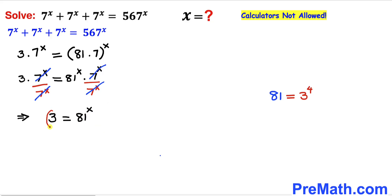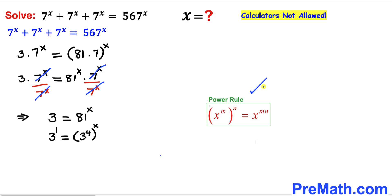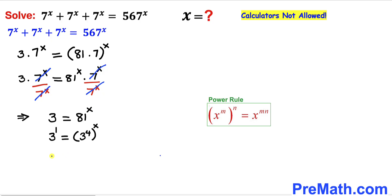I am going to replace 81 with 3^4. Likewise, 3 can be written as 3^1. So therefore this equation becomes 3^1 equals (3^4)^x. Now let's recall the power rule of exponents: (x^m)^n equals x^(m times n). Applying that rule on the right hand side, this becomes 3^(4x). So therefore this equation can be written as 3^1 equals 3^(4x).